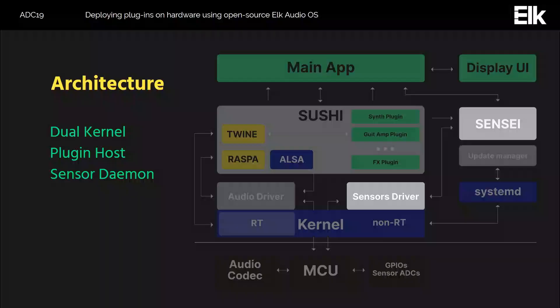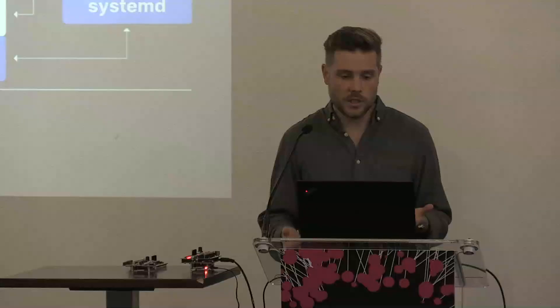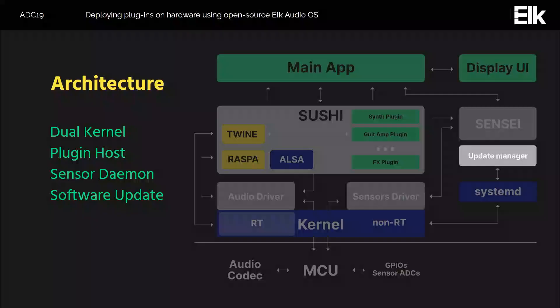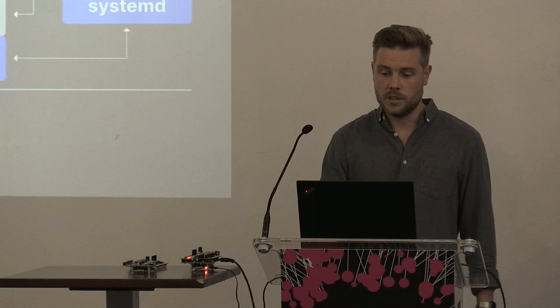We also have a sensor daemon that makes it very easy to connect things like potentiometers, switches, and LEDs without low-level coding. You specify in a JSON file what hardware you have and which pins they are connected to, and you can use that to control parameters on plugins. We handle debouncing of switches and counting clicks on encoders. We also have small but crucial features for industrial-strength products, like a software update system — you can update the whole software from a USB stick. It's based on a dual partition system to ensure stability: pulling the plug in the middle of an update won't break the device.